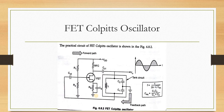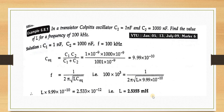The FET-based Colpitts oscillator simply replaces the BJT with a FET. The frequency of oscillation is F = 1/(2π√(L·C_eq)), where C_eq = C1·C2/(C1+C2).